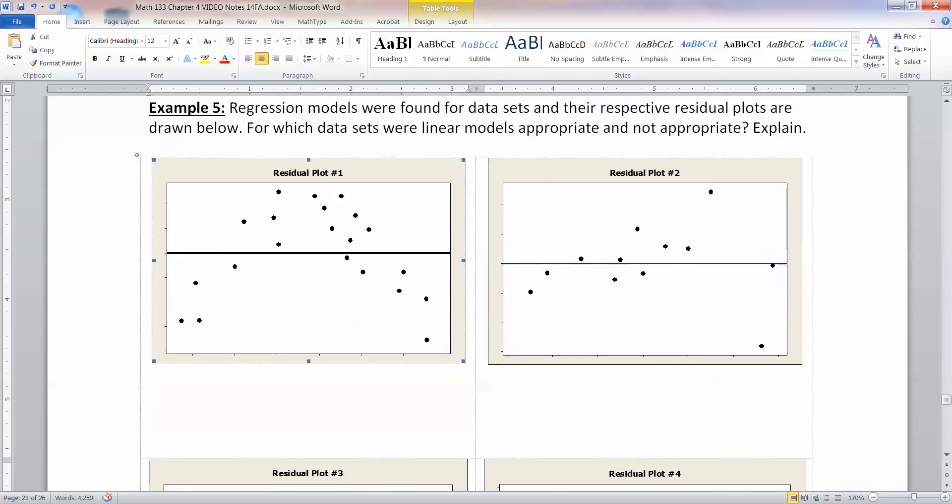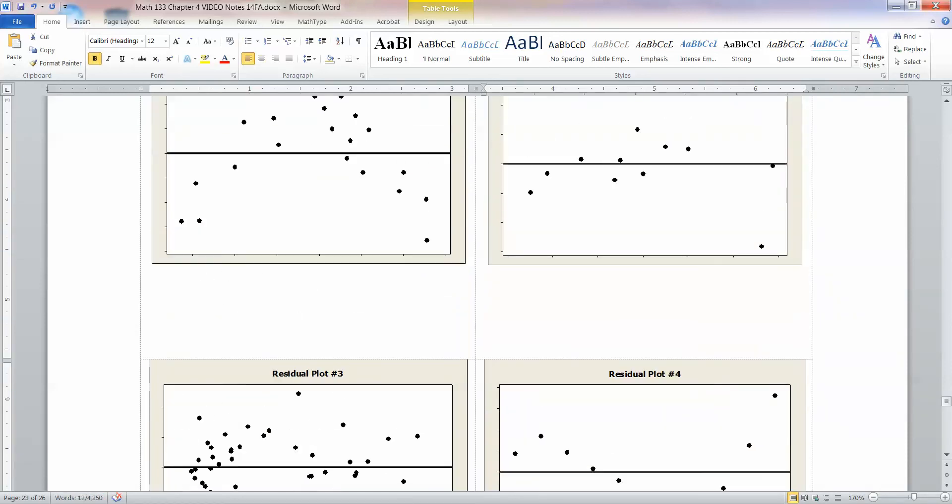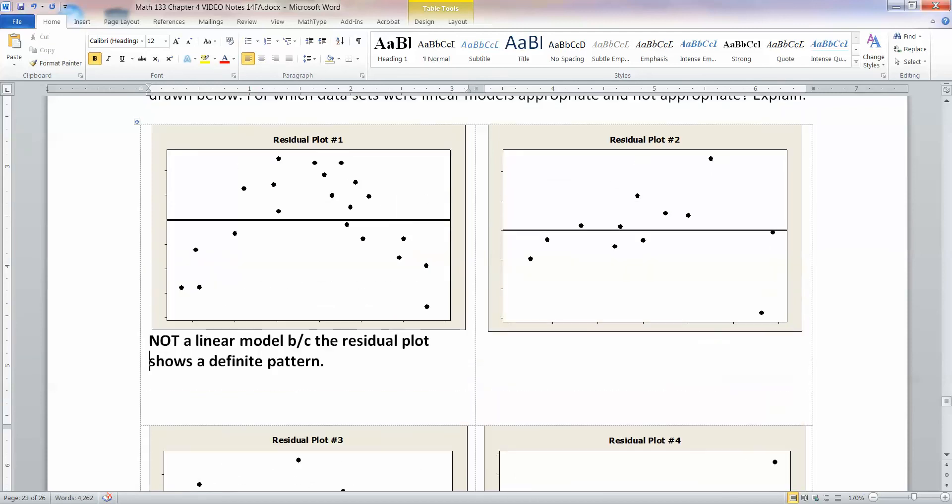What about here for residual plot one and residual plot two? Well, you can see this has a distinctive pattern. Starts low, goes up, and goes back down. So, again, this is not a linear model because it shows a definite pattern. It shows kind of a U-shaped pattern. And that's usually a very problematic pattern to see. That usually means that there's an exponential curve lying behind our data set.